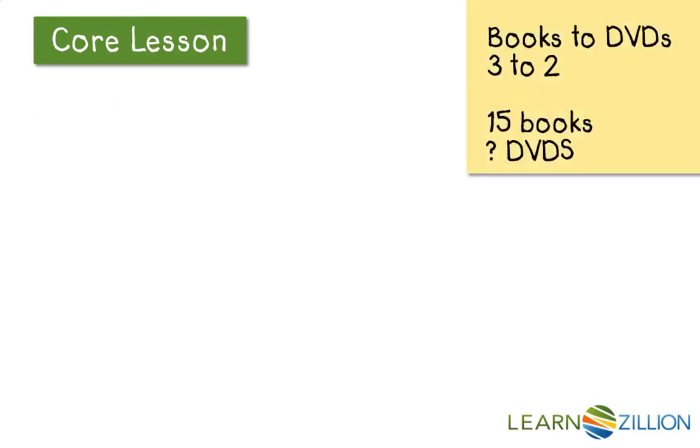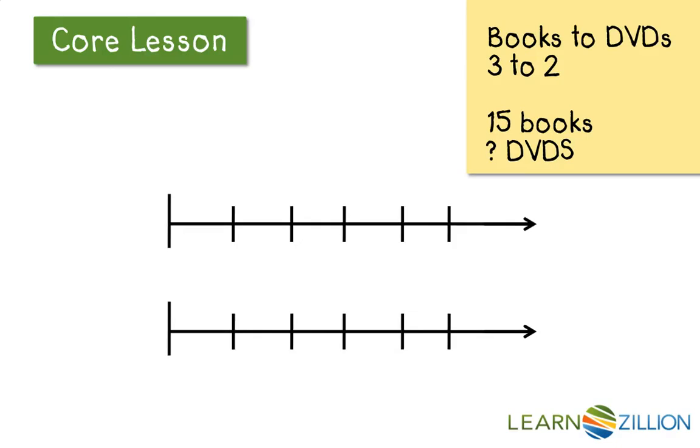As we go through and solve, I like to keep a post-it note of the key information to my side so that I can refer back to it during setup and when I'm checking over whether or not my answer is reasonable. So to set up a double number line, it's exactly what it sounds like. You draw two number lines parallel on top of each other. One of them is going to represent books, the other is going to represent DVDs.